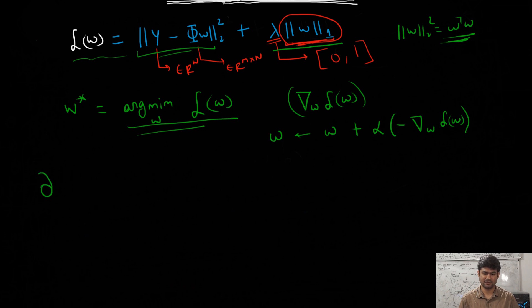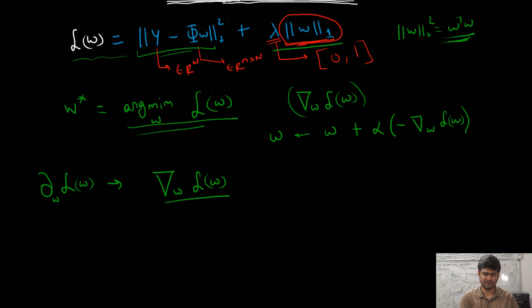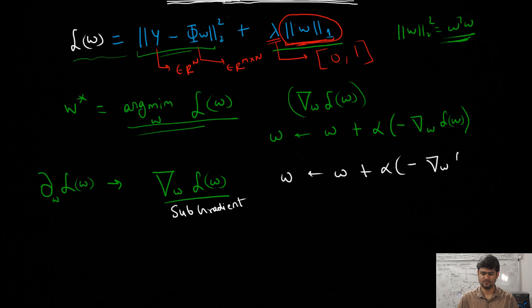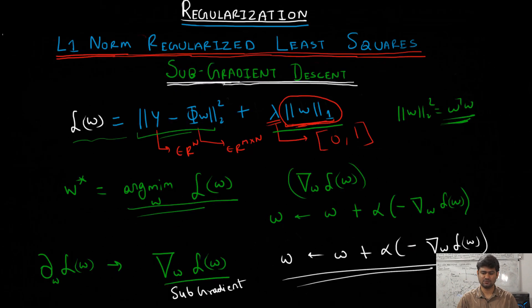We can compute the subgradient of the loss function with respect to W, and for simplicity denote the subgradient using the same gradient notation. Once we obtain the subgradient, we can update the parameters as W goes to W plus alpha times the negative of the subgradient of the loss function. Now we will see how to compute the subgradient of this term.